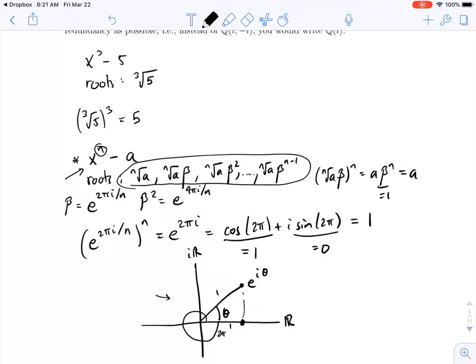Okay, so we go back up to x cubed minus 5, since it's a cube. We're going to let alpha be e to the 2 pi i over 3, so then my roots will be cube root of 5, cube root of 5 alpha, and cube root of 5 alpha squared.